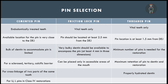Threaded pins are indicated only in vital teeth — except cemented pins, which are indicated for root canal treated teeth, friction lock and threaded pins are indicated only for vital teeth. The pin location should be at least 1.5 mm from the dentino-enamel junction. The minimum number of pins needed should be used, because threaded pins are very retentive. When maximum retention with a minimum number of pins is required, threaded pins should be chosen. They should be placed only in properly hydrated vital dentine.